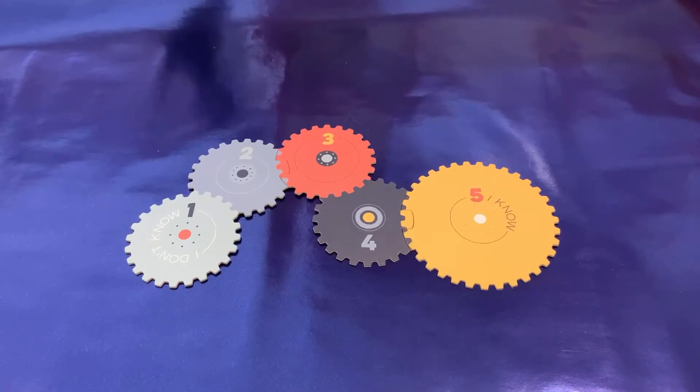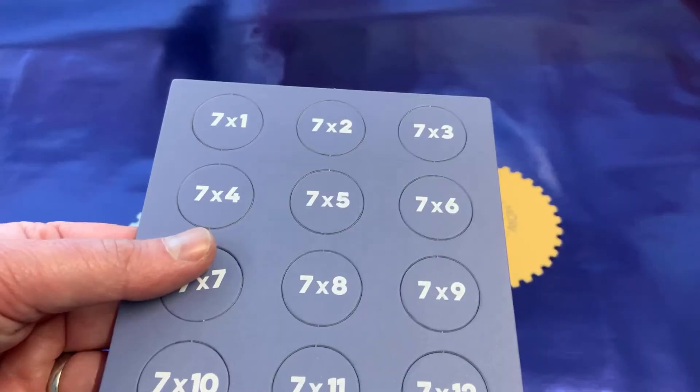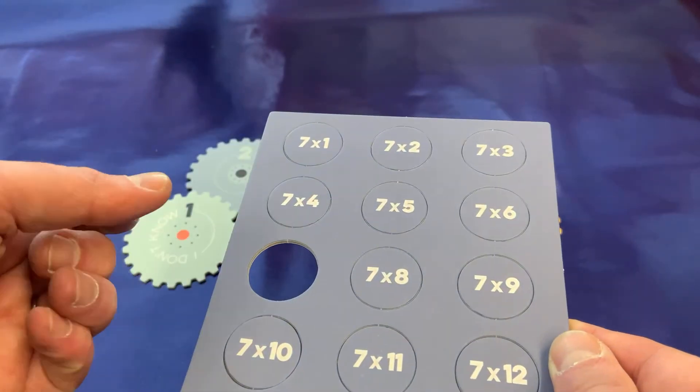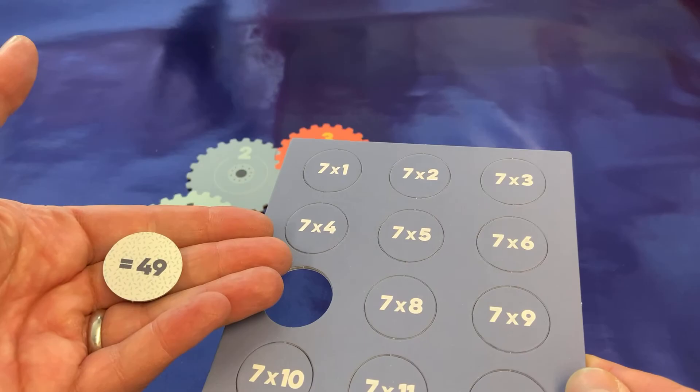The cogs are placed together like a jigsaw. Each of the times table facts come on these press-out pieces which are double-sided to reveal the answers.